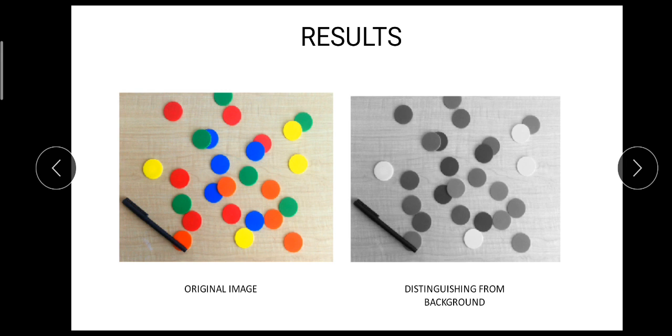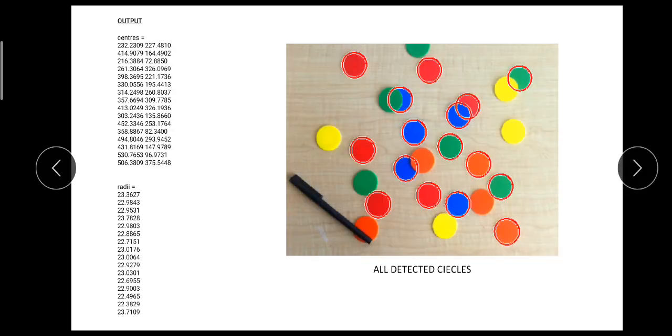After that we are getting all the images having their centers and the radius. This is the original image which is a colored image, and this is the grayscale image. Here we can easily see that the background is lighter and we can detect the different circles. This is the final output where we are getting all the centers here and radii of the circles here.